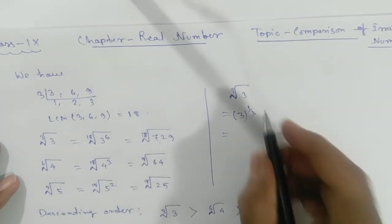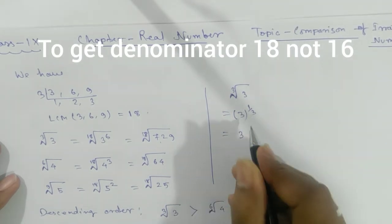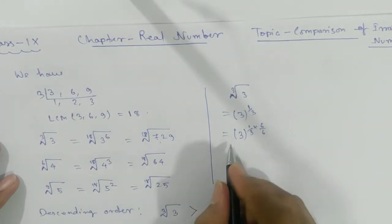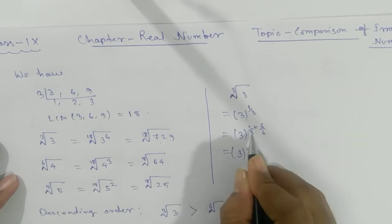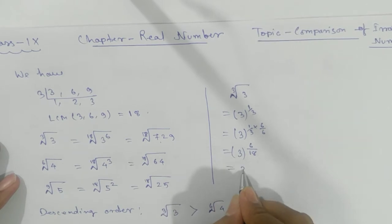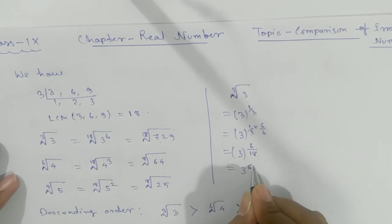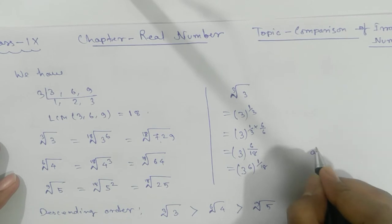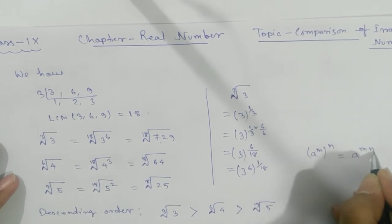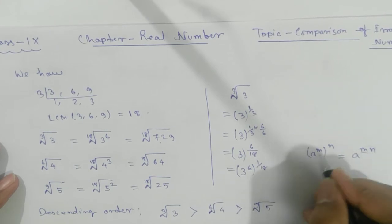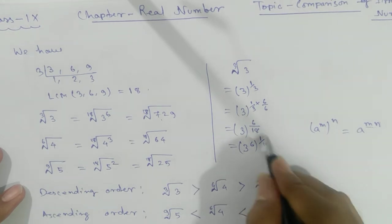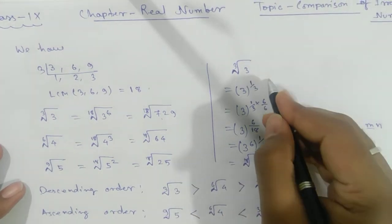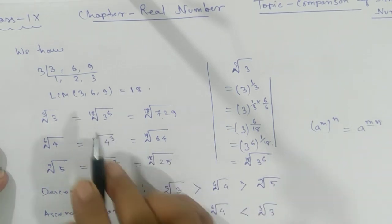See, your target is to get denominator 18. That means if we multiply 6 in numerator and denominator we'll get your target, that is 6 by 18. This can be written as 3 to the power 6, power 1 by 18. How? See, a to the power m power n can be written as a to the power m into n. That means if powers are multiplied, then you can make it in this form. Here you can see 1 by 18 means 18th root of 3 to the power 6. So no need to show this whole step. Directly you can write it this way.